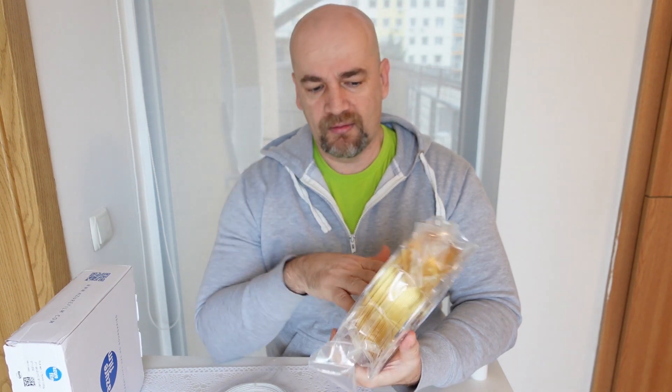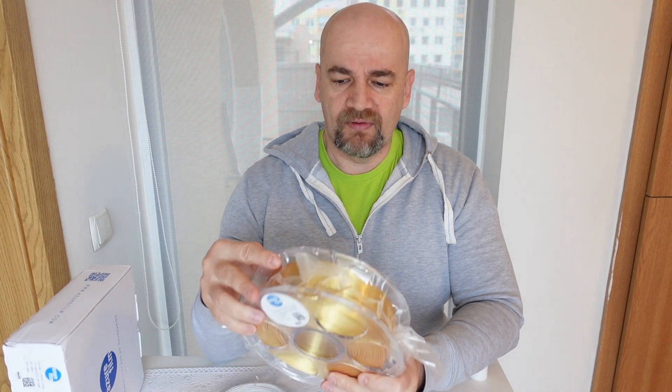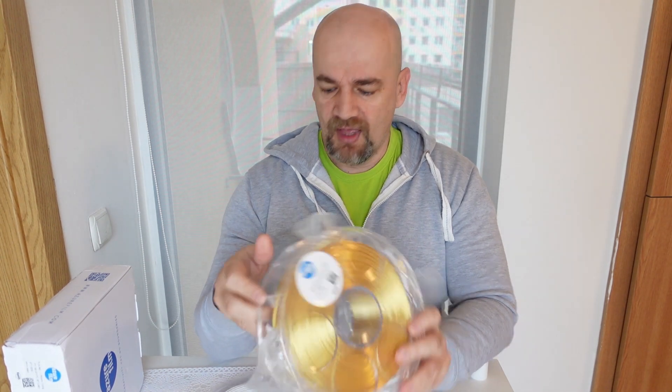Of course my first test will be a benchy where I can see the overhang, the bridging, quality of the surface. But I also want to check that weaker bed adhesion, so I will test it with a PEI sheet. I will print it in my Prusa MK3S and also I will print it on my Ender 3 V2 where I have the textured glass.